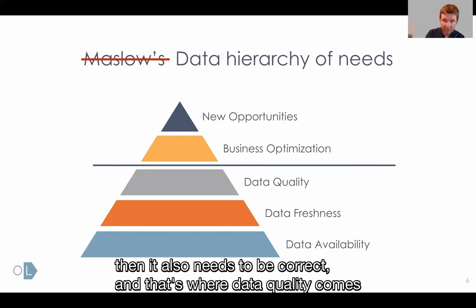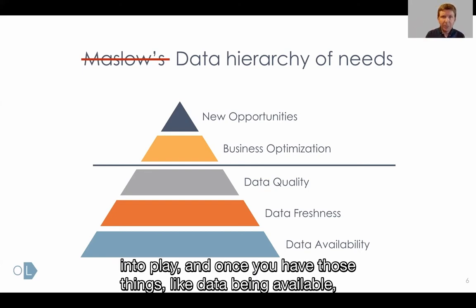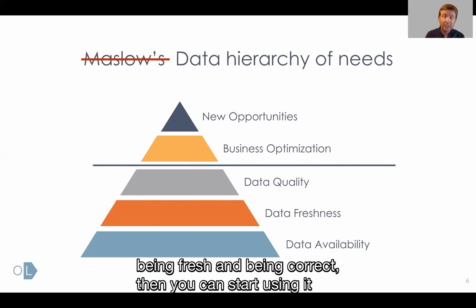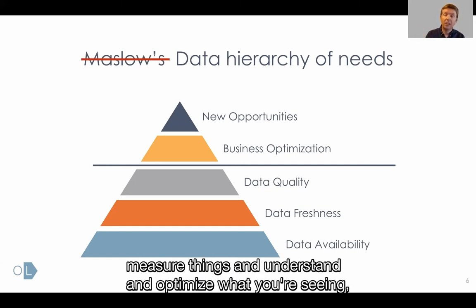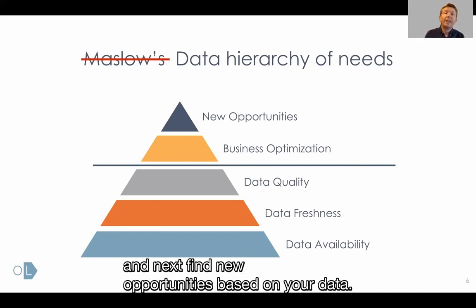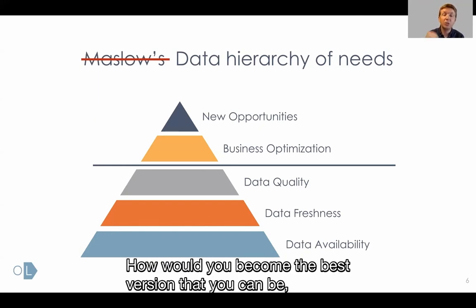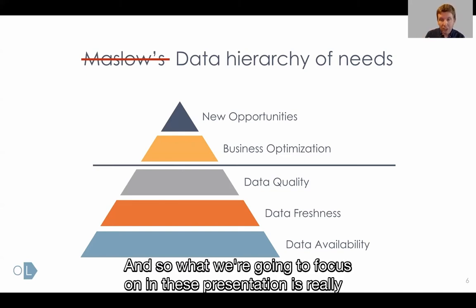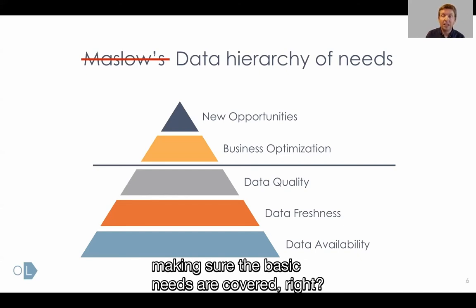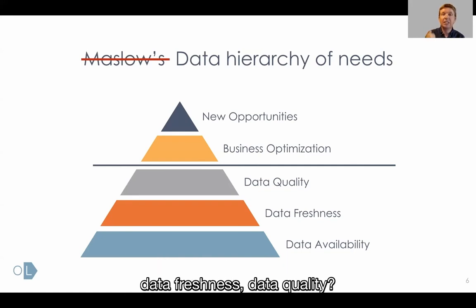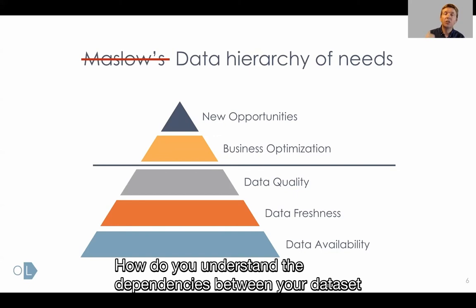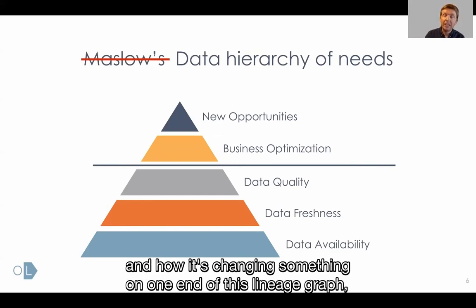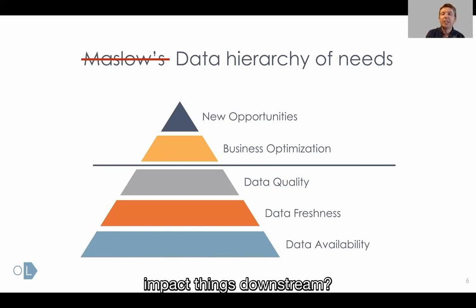Once your data is available and timely, it also needs to be correct — that's where data quality comes in. Once you have data that's available, fresh, and correct, then you can start using it to optimize your business, measure things, and find new opportunities. So it's the data hierarchy of needs, and what we're going to focus on in this presentation is making sure the basic needs are covered: data availability, freshness, and quality — monitoring them and understanding how changing one end of the lineage graph impacts things downstream.